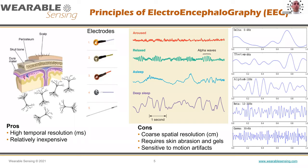Those bands relate to the order in which brainwaves were discovered, but also to functional relationships of those activities to brain areas — specific brain areas, when active in different types of activities, will have different frequency patterns. There are a number of other features and other ways to look at EEG signals, but today I'm going to focus mainly on spectral features.